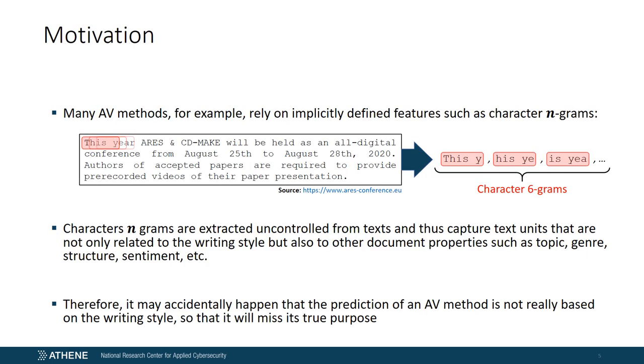Many existing AV methods, for example, make use of implicitly defined features, in particular character n-grams. Character n-grams are overlapping strings which are obtained by sliding a window of n characters over a document from left to right. But there is an issue with character n-grams. Since they are extracted from documents in an uncontrolled way, they capture various text units that, besides writing style, also cover other document properties such as topic, genre, structure, sentiment, and many more.